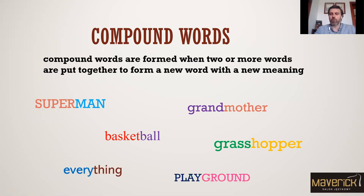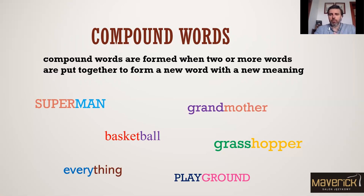Everything and playground. Very often you will be surprised that there are actually two words inside this one word that you know, and then it will come as a surprise — basketball, okay. There are two components: basketball, playground, grandmother — all these words are made up of two components. You put them together, or you just break up the word and you have two components that you can switch around.